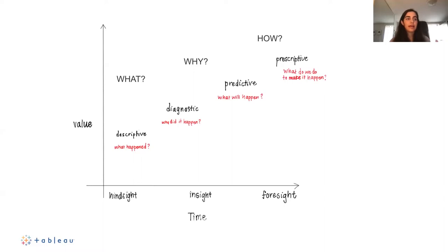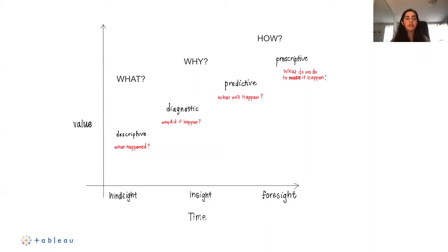Different types of dashboards exist across a spectrum of value over time. Good dashboards can be descriptive — what happened — or diagnostic — why did it happen. The best dashboards move toward actionable decisions: predictive (what will happen) and prescriptive (how do we make it happen). I like to use the what, why, how framework and design dashboards in tiered views, from the highest level of information down to the most detailed information needed to make a decision.